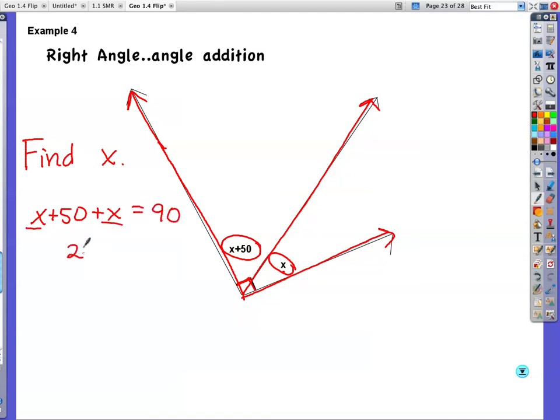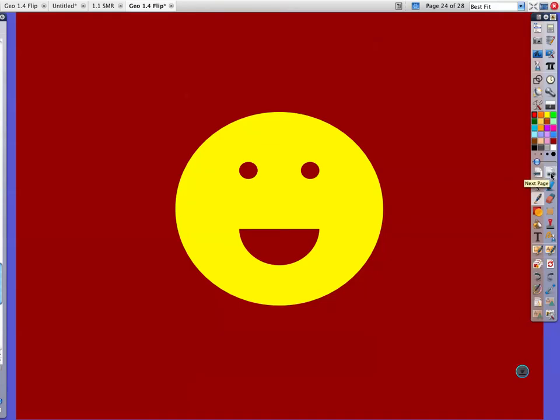Combine my terms. 2X plus 50 equals 90. I'm going to subtract 50 from both sides. Divide both sides by 2. I get X is equal to 20. I'm going to do a double check. If X is 20, then I have 70 for this angle, and then I have 20 for this angle. And 70 plus 20 is 90. So this looks like a pretty solid answer. And that is the end of your lesson.